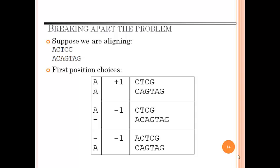Now breaking apart the problem: suppose we are aligning ACTCG and ACAGTAG. According to the first position choices, for plus 1 it is CTCG and CAGTAG. For minus 1 it is CTCG and ACAGTAG, and for a third choice it is again minus 1 and it is ACTCG and CAGTAG.